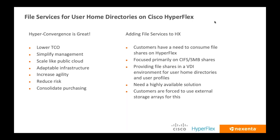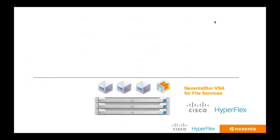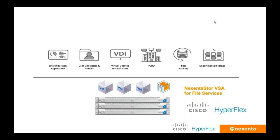Thanks Aravind. The concept here is utilizing the Nexenta Store VSA for file services on top of HyperFlex, deploying it as a traditional VM on top and utilizing the storage from HyperFlex underneath. The initial big use case we've done testing on is VDI — whether for home directories, user profiles, or ROBO and departmental storage. This gives you file services on a HyperFlex environment at a branch office or as the core for your VDI environment, without having to purchase an additional third-party array.